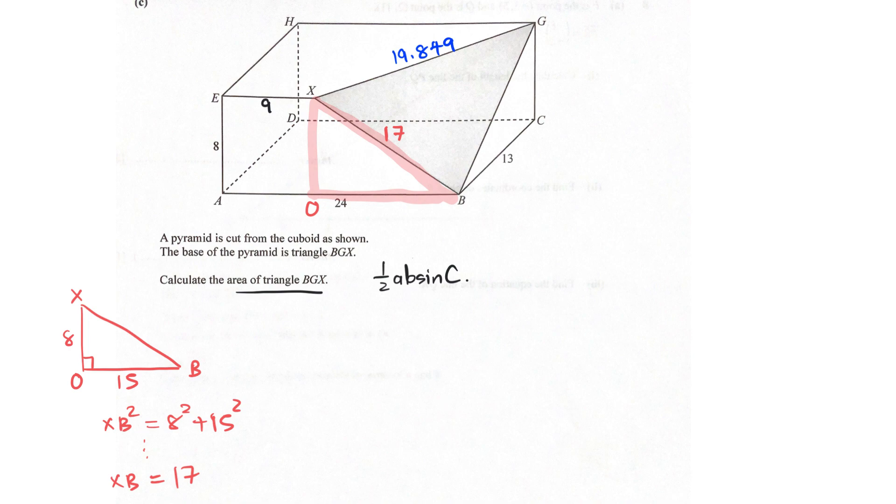Technically, based on the half AB sine C, we already have two sides, but we don't have an angle. Now, that's a problem. So, we actually need... It's a 5 mark question. Obviously, there's a lot of working. We're going to need to know what BG is, guys. BG is on this plane when looked at from this angle.